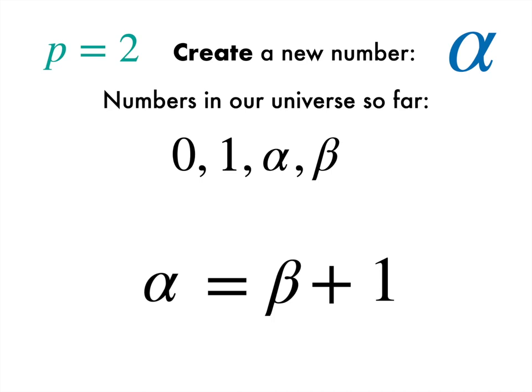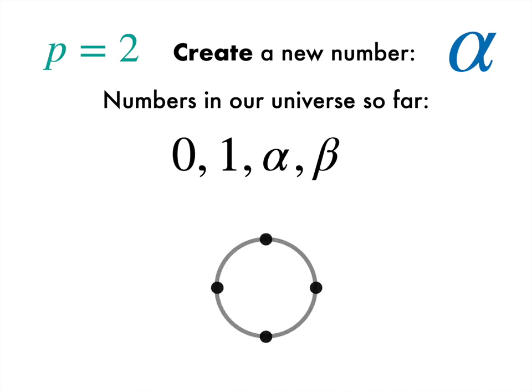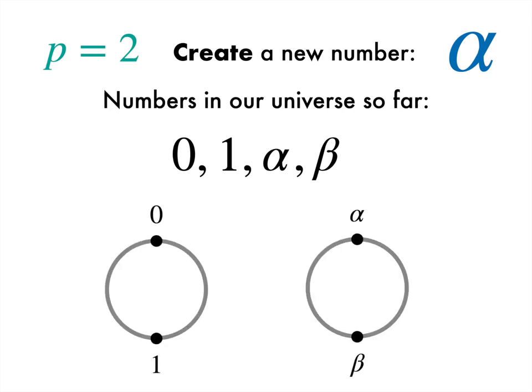But in some sense, that isn't hugely surprising. Our first idea was to take a circle with 4 points, but now instead we have 2 separate circles with 2 numbers on each. We have one final thing to try, and that's multiplication.